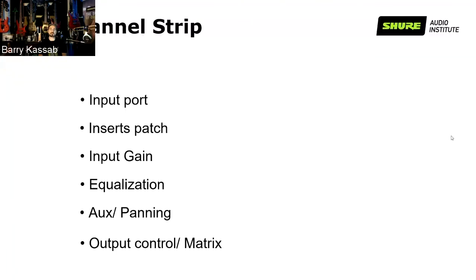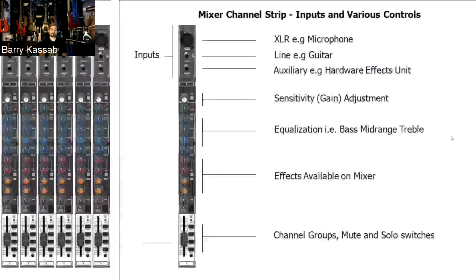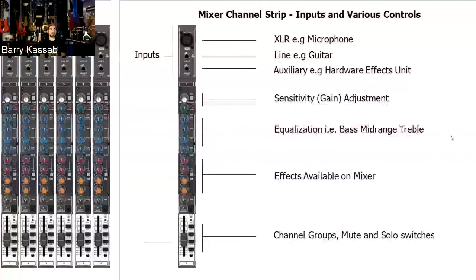So that's a basic breakdown of a channel strip. A channel strip looks exactly like this — a multiplication of these strips side by side. For example, here we have six channels, so it's a six-channel mixer. Each one of those would have a channel strip with all the components described.